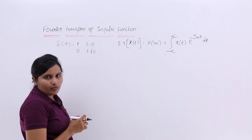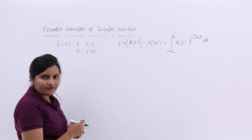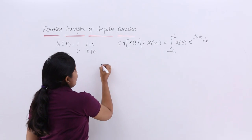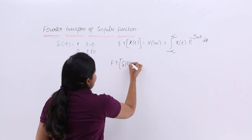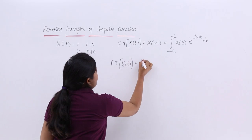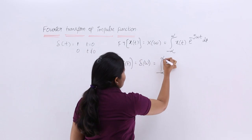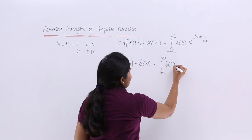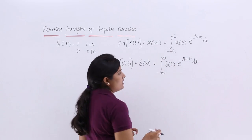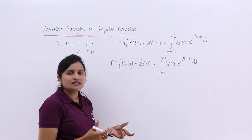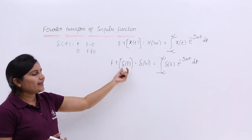I want to apply the same formula to the impulse function δ(t). So the Fourier transform of δ(t) — let's call it Δ(ω) — is equal to the integral from minus infinity to infinity of δ(t) multiplied by e^(−jωt) dt, where δ(t) takes the place of the general signal x(t).